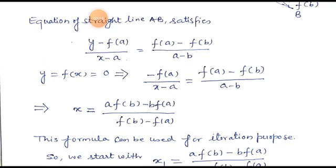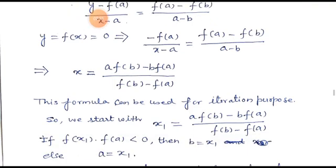After transformation and solving this equation for x, we find: x = [A·f(B) - B·f(A)] / [f(B) - f(A)]. This formula can be used for iterative purposes. We start with x₁ = [A·f(B) - B·f(A)] / [f(B) - f(A)].